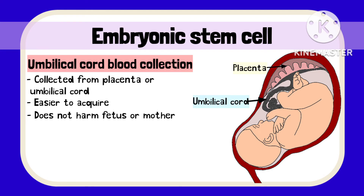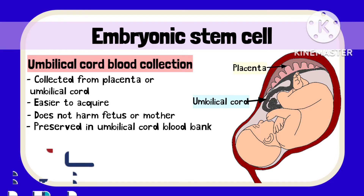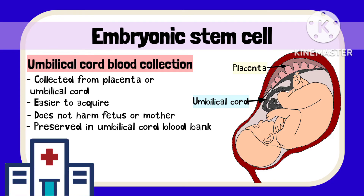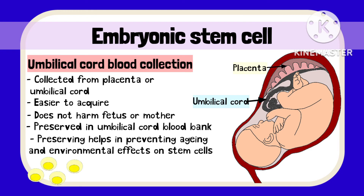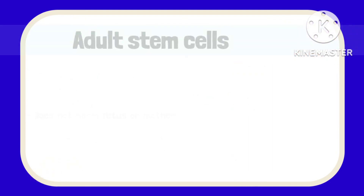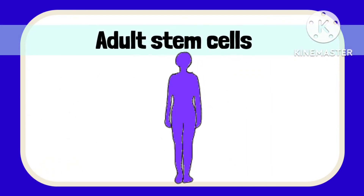Cord blood is now being used worldwide to treat many diseases and in transplant procedures. It is now commonly preserved in cord blood banks for future use. Preserving cord blood helps stop the cells from aging and protects them from environmental and other factors, keeping them viable whenever they are needed.